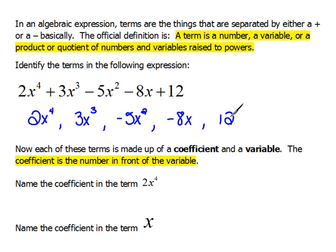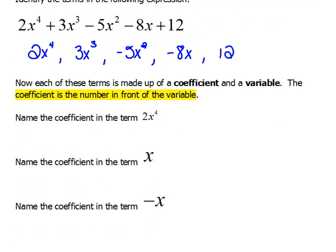All right now each term has vocabulary within it. Each term is made up of a coefficient and a variable. The variable of course would be the letter part. The coefficient is the number part. So here we have three examples. We are going to name the coefficient in each one. The coefficient here is the number in front of the variable. So for this term it would be 2.